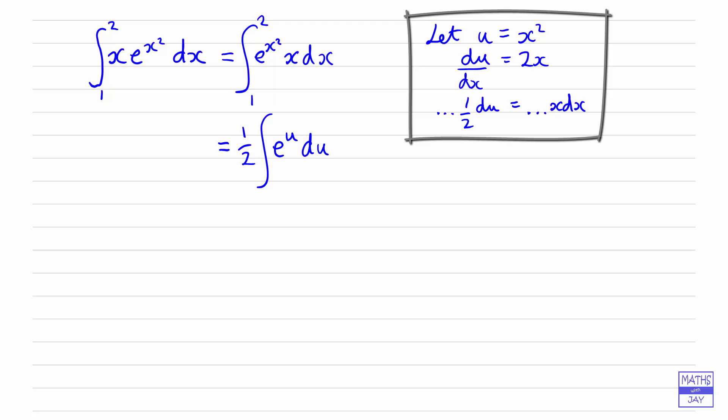Now because we've got a u after our d, our limits have now got to be what u is equal to. So using what u is in terms of x, we can say that when x is 1, u is equal to, well if u is x squared, u is going to be 1 squared so u is in fact still 1.